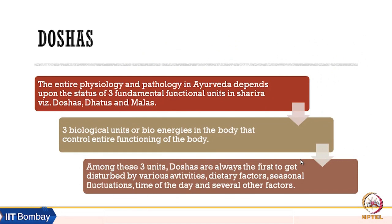Let us look at doshas. The entire physiology and pathology in Ayurveda depend upon the status of three fundamental functional units in sharir: doshas, dhatus, and malas. These units, or bioenergies, control all functioning of the body. Among these three units, doshas are always the first to get disturbed by various activities.